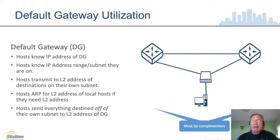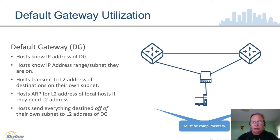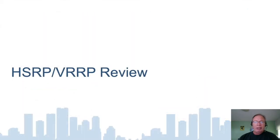By the same token, if I'm trying to send something off of my subnet, there still must be a layer 2 header. I will do the same ARP procedure in order to obtain the MAC address of my default gateway. Therefore, everything I'm trying to send off of my subnet will have my own source MAC address and the destination MAC address of the default gateway.